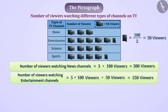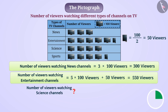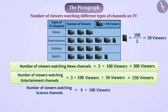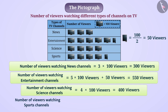Can you tell what will be the number of viewers of science channels? Think! The answer is 4 multiplied by 100 viewers, which equals 400 viewers. Similarly, the viewers of the sports channel is 450 viewers.